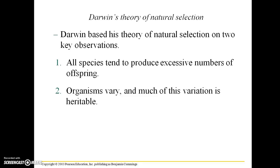Darwin's theory of natural selection is based on two key observations. First, all species tend to produce excessive numbers of offspring — this is apparent in species such as fish that can produce thousands or even millions of eggs in their lifetime, as well as insects. Second, organisms vary: they differ from one another not just between species but within species, and much of this variation is heritable, meaning it has a genetic basis and can be passed from one generation to the next.